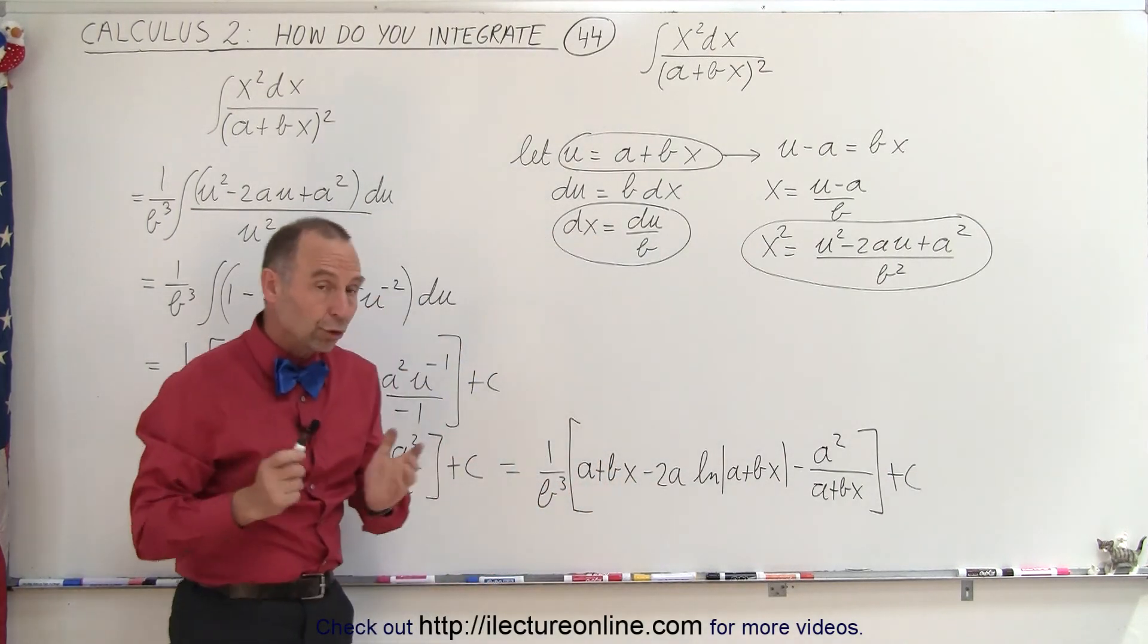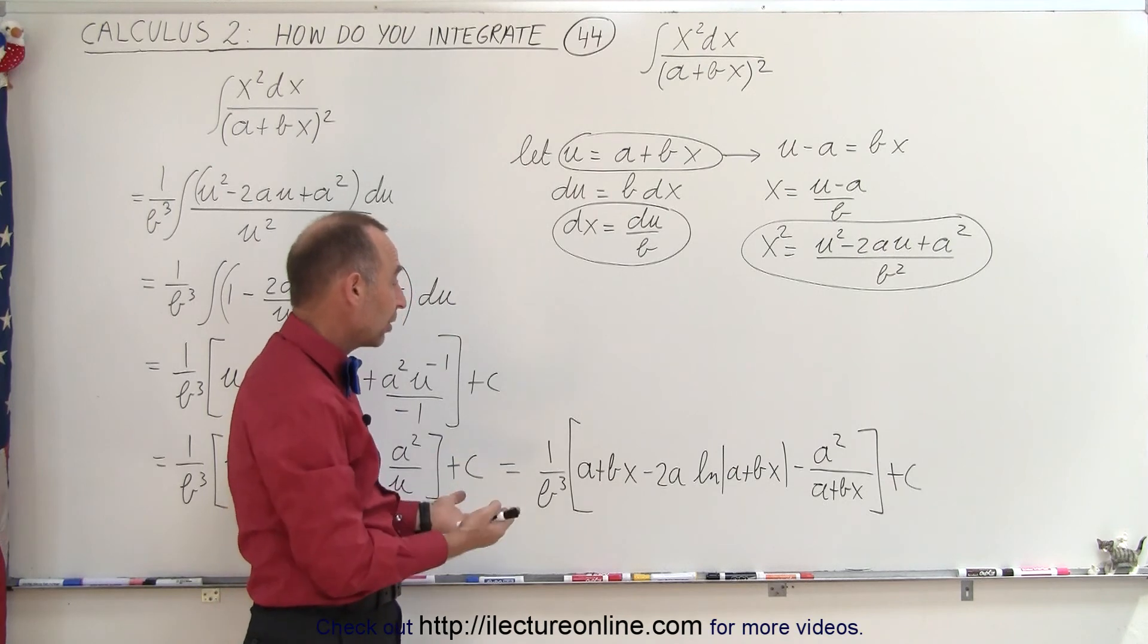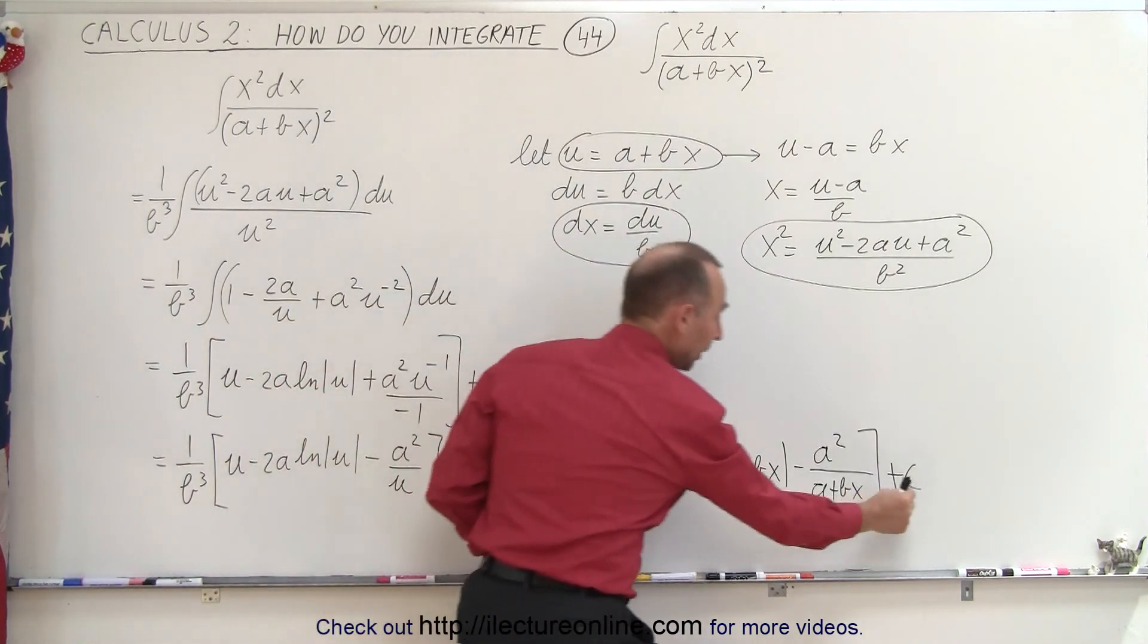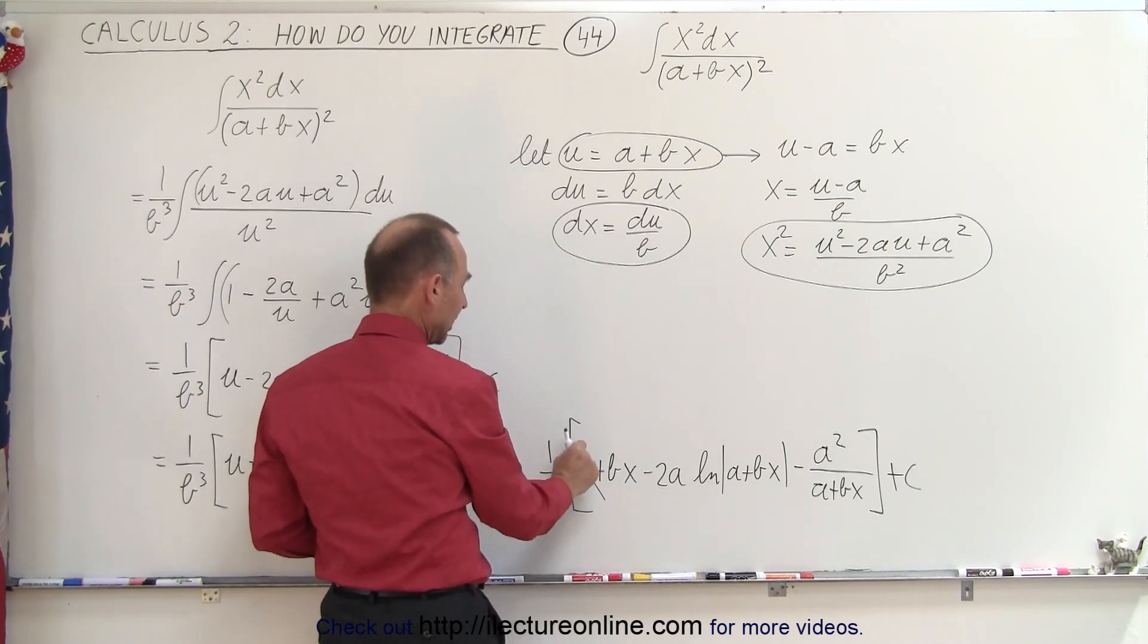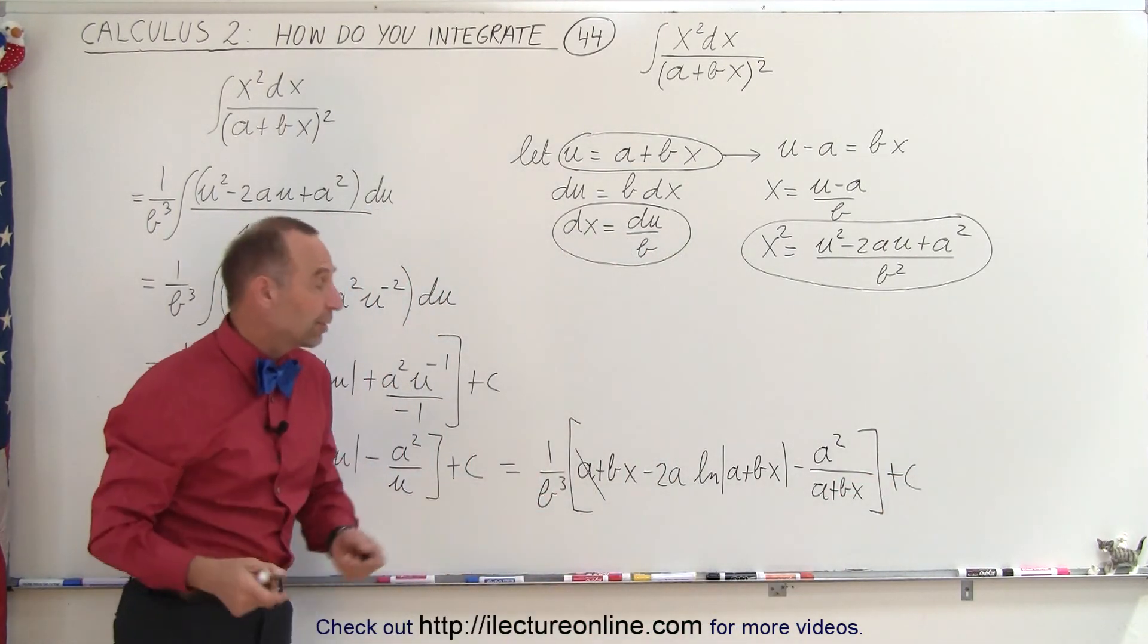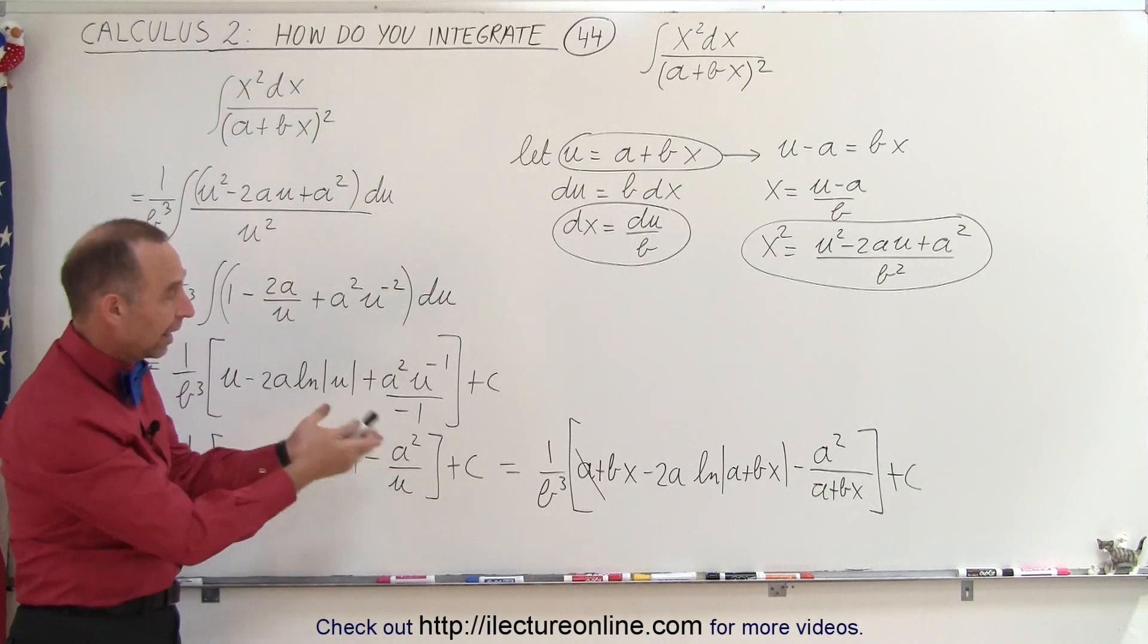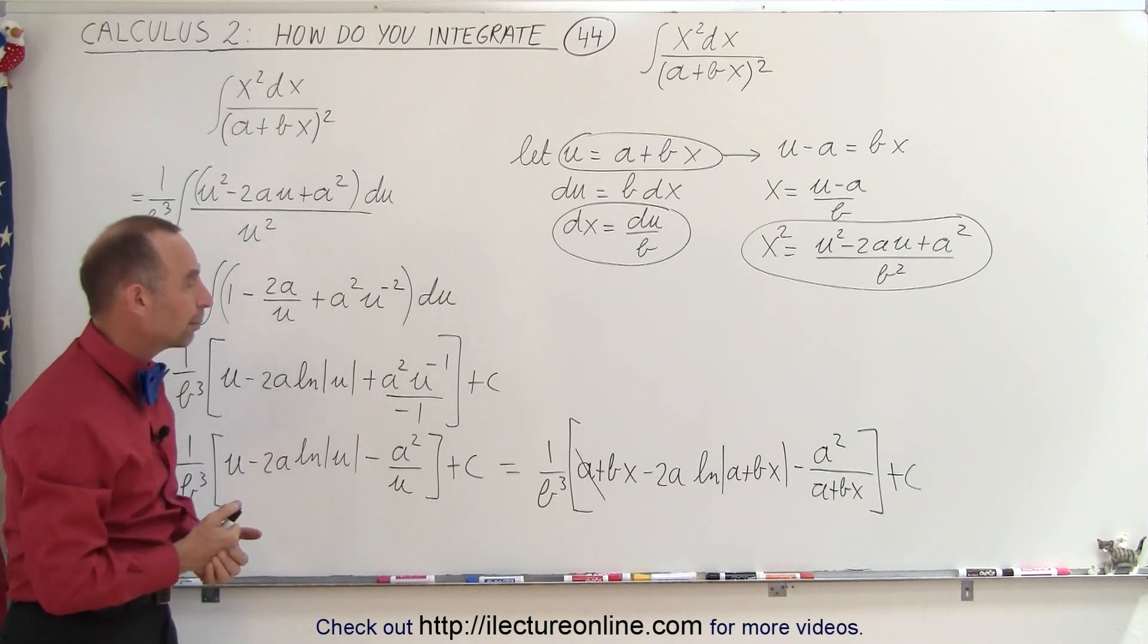And then what you could do, realize that a divided by b cubed is simply another constant, which can be absorbed by this constant right here, so we can actually get rid of the a, realizing that a divided by b cubed just gets added to another constant, and the arbitrary constant becomes a constant, and that will then be the final result of that particular integral. And that's how it's done.